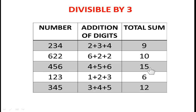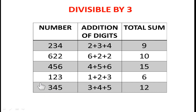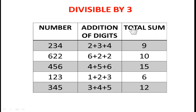For 456, the sum of digits equals 15. Since 15 is divisible by 3 (3×5=15), we can say 456 is also divisible by 3. For 123, 1 plus 2 plus 3 equals 6 — divisible by 3, so 123 is divisible by 3. For 345, 3 plus 4 plus 5 equals 12, which is divisible by 3, so 345 is also divisible by 3. The divisibility rule of 3: add all digits; if the sum is divisible by 3, the given number is also divisible by 3.